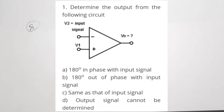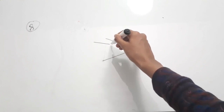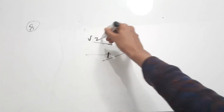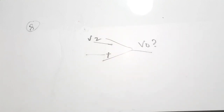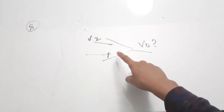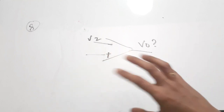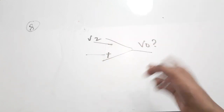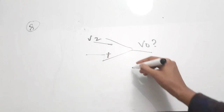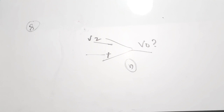The eighth question is from op-amps: determine the output from the given circuit. The circuit shows an op-amp with the input connected to the inverting terminal, making it an inverting op-amp. Since this is an inverting op-amp, the output will be 180 degrees out of phase with the input — that is the fundamental property. The correct answer is option B.